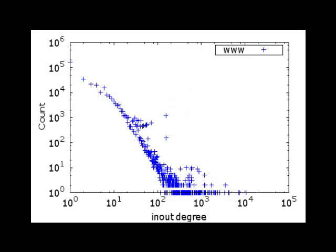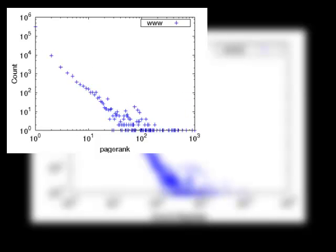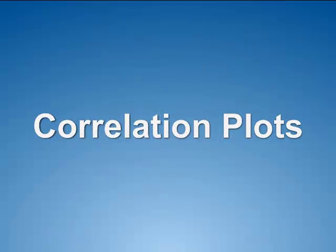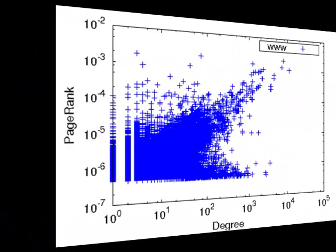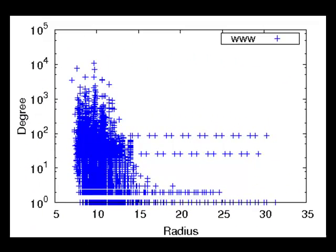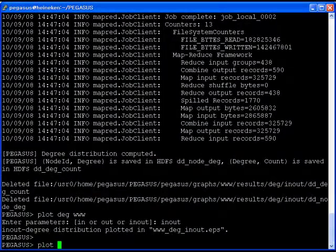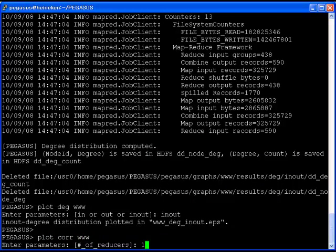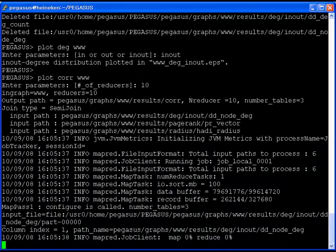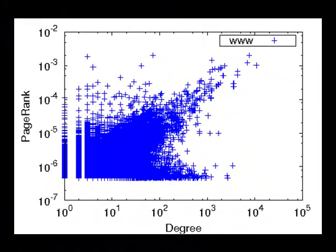Plotting the PageRank and Radius distributions is similar to plotting the degree distribution. In addition to the distribution of individual properties of a graph, we can plot the correlation plots of two properties. Pegasus generates three correlation plots: degree vs PageRank, radius vs PageRank, and radius vs Degree. To generate the correlation plots, type the plot-core graph name command. The command creates three scatter plots showing the correlation of two properties. These scatter plots help us to spot patterns and anomalies. For example, nodes with high degree but low PageRank, or nodes with low degree but high PageRank, are possible anomalies that need further investigation.